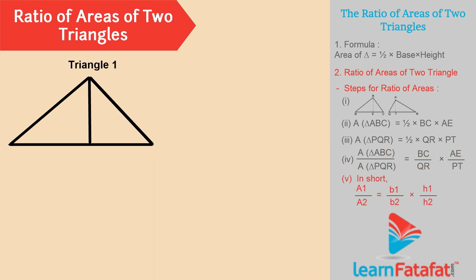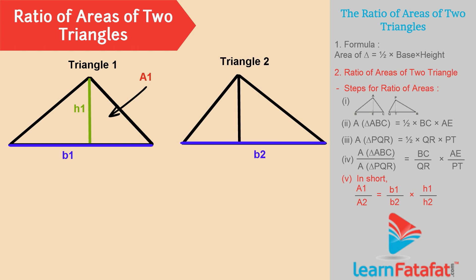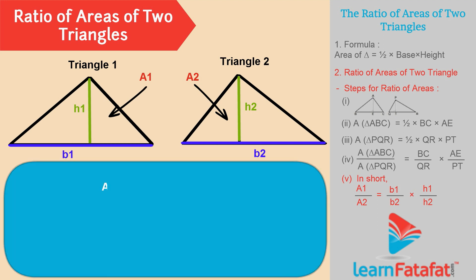Simply saying if area of triangle 1 whose base is B1 and height is H1 is A1, and if area of triangle 2 whose base is B2 and height is H2 is A2, then the ratio of areas of two triangles can be given as A1 divided by A2 is equal to B1 divided by B2 into H1 divided by H2.